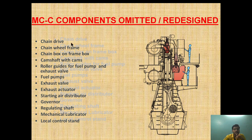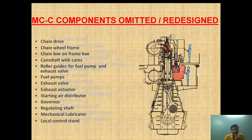The long chain drive, chain wheel frame, frame box, and camshaft arrangement are omitted. The starting air distributor, governor, regulating shaft, mechanical lubricator, and local stand have been replaced with a CCU. By replacing mechanical parts with electronic parts, we achieve better control, better accuracy, less wear and tear, and hence increased efficiency of engine performance.